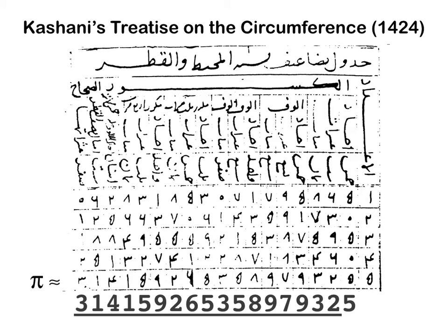The Europeans inherited the Hindu-Arabic numeral system from the Arabic tradition. Here I have an example from a work written in Arabic — Al-Kashi treats the circumference of a circle, or the value of pi in modern terms. The bottom line is his decimal approximation for pi, accurate to many decimals, as you can see from my translation into our notation. The underlined part is all accurate decimals of pi, making this the best approximation of pi for hundreds of years.